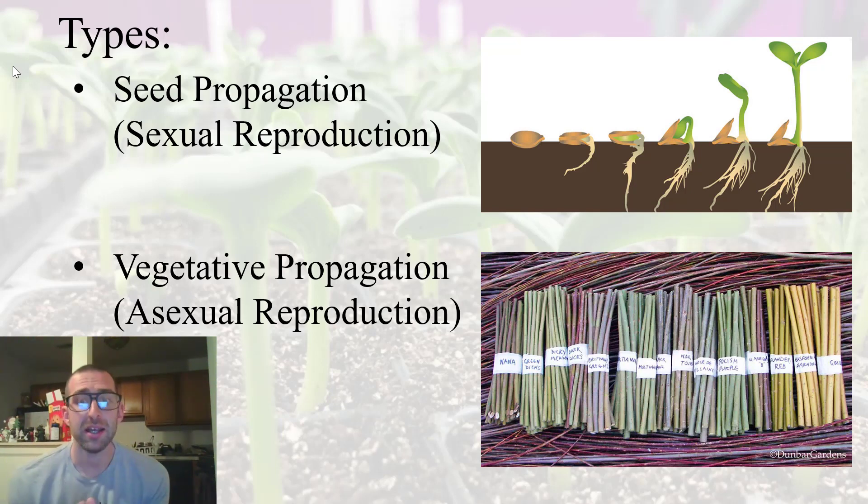Now, vegetative propagation is asexual reproduction. And what's happening with vegetative propagation is we're either taking advantage of these natural structures that our plants produce towards this goal of asexual reproduction. Or we are taking pieces of the plant, whether it's stem tissue or root tissue or leaves. And we are relying on the ability of many plants to regrow organs that are lost. So if we took a stem tissue, we're relying on the ability of this plant to regrow a root system. And many plants are able to do that.